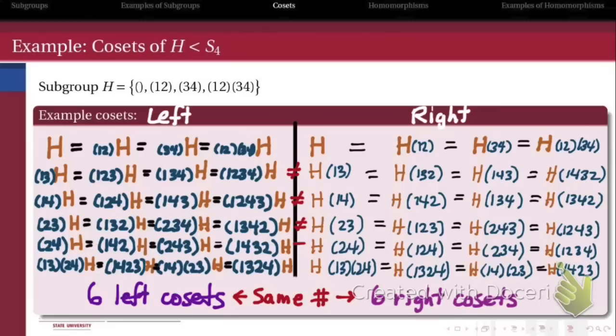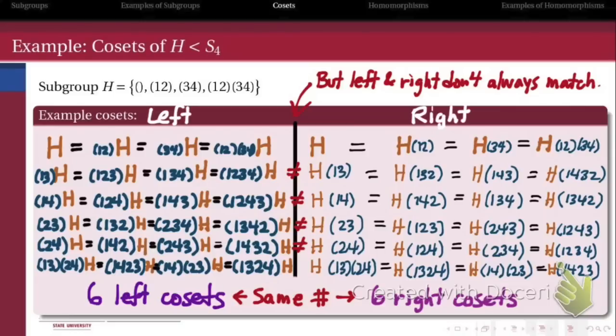But the cosets themselves are a little bit different. They consist of different elements in them. The left cosets and the right cosets don't always match up. It turns out that when the left and right cosets do match up exactly, in other words, they have not only the same number of elements, but the same elements, that's a special case that we're going to call H a normal subgroup in our next set of lectures.